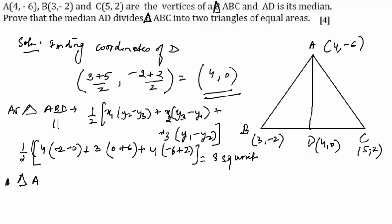triangle ADC by the same formula: 1/2[4×(0-2) + 5×(-6-0) + 4×(2+6)].